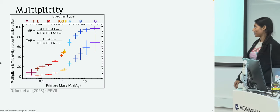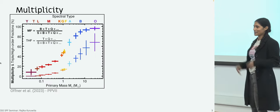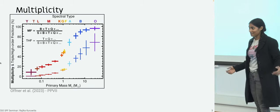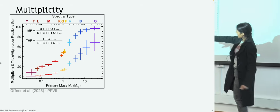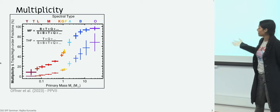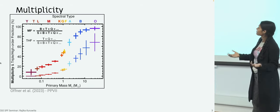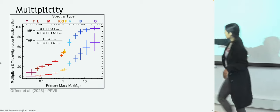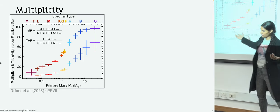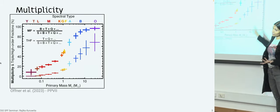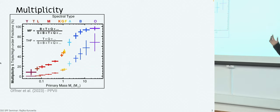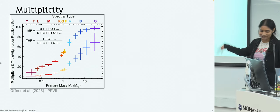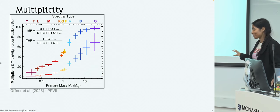Most of you are astronomers, so I hope you know some basics about multiplicity. Basically, a lot of stars exist in binary or multiple star systems. The x-axis is the mass of a star and the y-axis is the fraction of those stars that have a companion. Lower mass stars have a lower multiplicity — fewer of them are in multiples — but basically all massive stars have a companion. Some people say half the stars are in binaries.